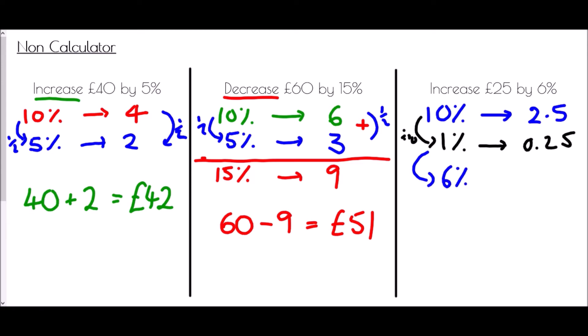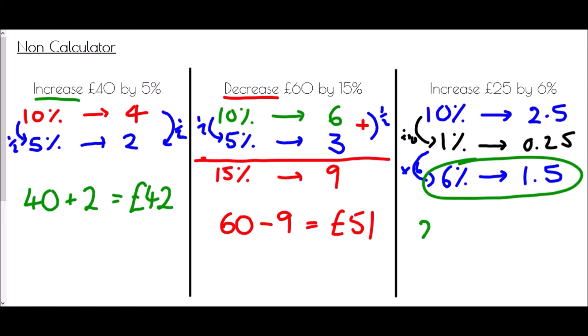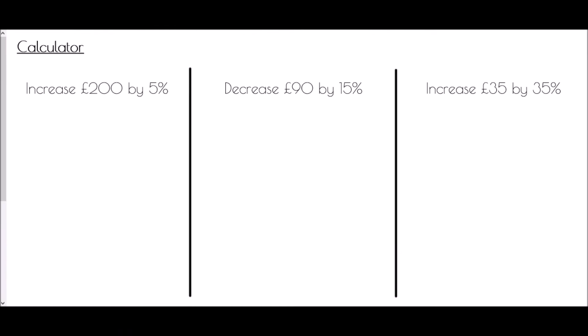Next I take 1% up to 6% by multiplying by 6. 0.25 times 6: four lots of 0.25 make 1, plus another two make 1.5, so 6% of £25 is £1.50. Since this is an increase, £25 plus £1.50 gives £26.50. With money we always need our pound sign and two decimal places, so the answer is £26.50.